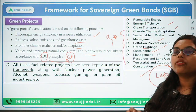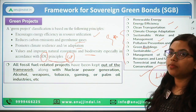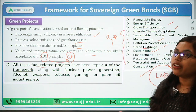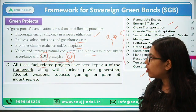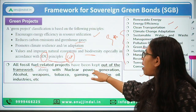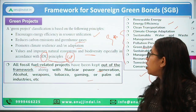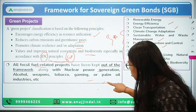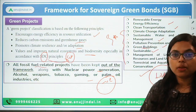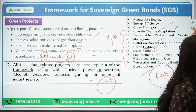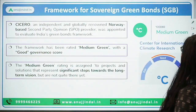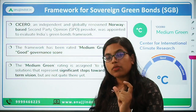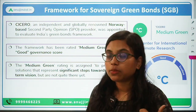As for what is not included in green projects: all fossil fuel-related projects are excluded. Additionally, nuclear power generation, alcohol, weapons, tobacco, gaming, and palm oil industries are all excluded from the list of green projects.